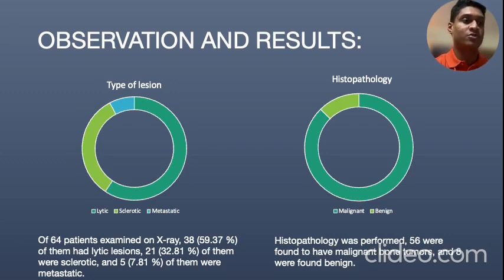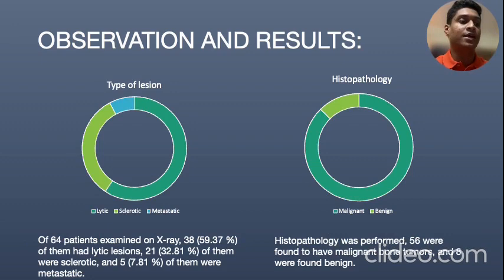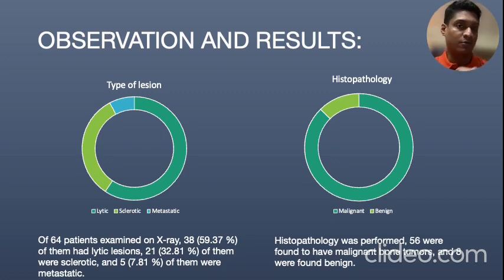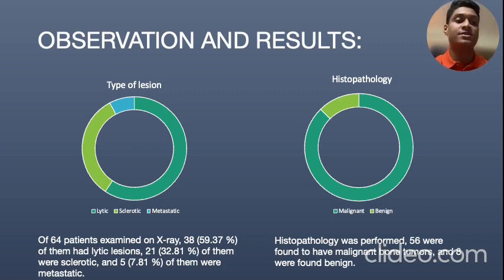The type of lesion was also described. Out of the 64 people examined on X-ray, 38 had lytic lesions, 21 were sclerotic, and 5 were metastatic. When the cases were sent to histopathology, 56 were found to be malignant bone tumors and 8 were found to be benign.